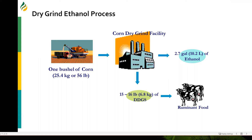The corn gets liquefied, simultaneously saccharified and fermented, and then distilled to produce ethanol. At the back end, we get what is called Distillers Dried Grains with Solubles — a co-product used mostly for ruminant animal diets.